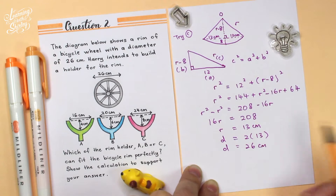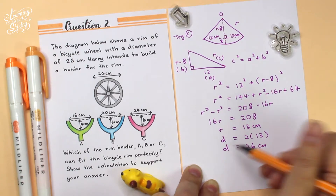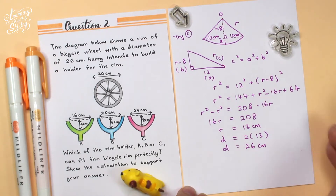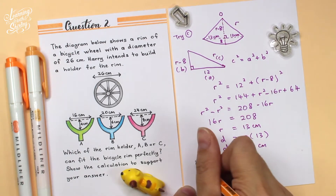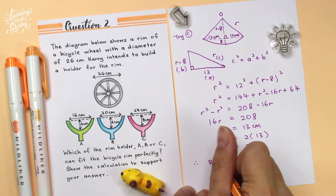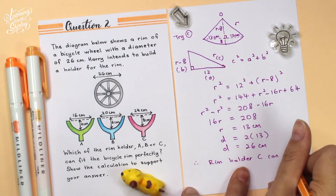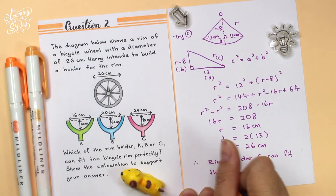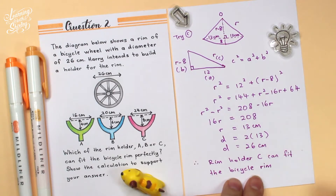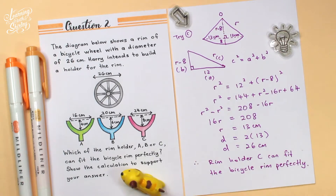Checking against the question — the bicycle wheel diameter is 26 cm and we got 26 cm — therefore rim holder C is the answer. Rim holder C can fit the bicycle rim perfectly. That's the final answer.